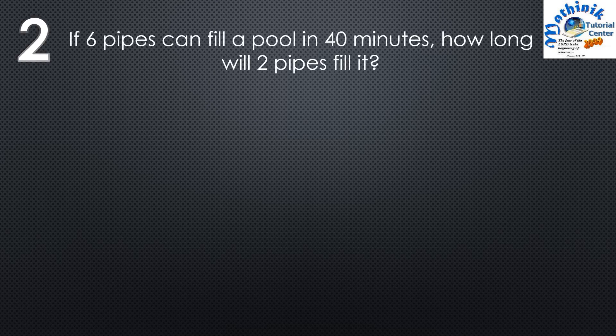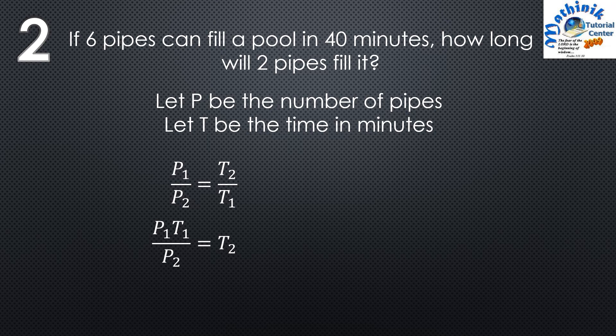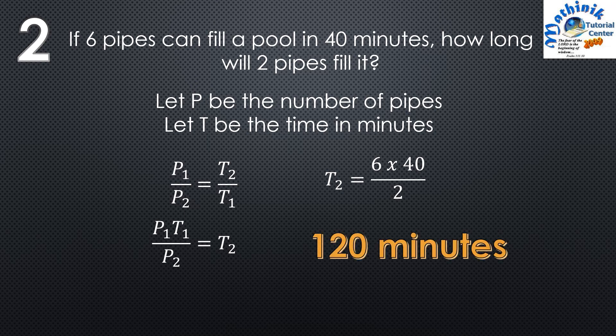Question number 2: If 6 pipes can fill a pool in 40 minutes, how long will 2 pipes fill it? This is an example of indirect variation. Let p equal the number of pipes and t the time in minutes. The number of pipes is indirectly proportional to the time. So p1 over p2 equals t2 over t1. Solving for t2: t2 equals p1 times t1 divided by p2, which is 6 times 40 divided by 2. The final answer is 120 minutes.